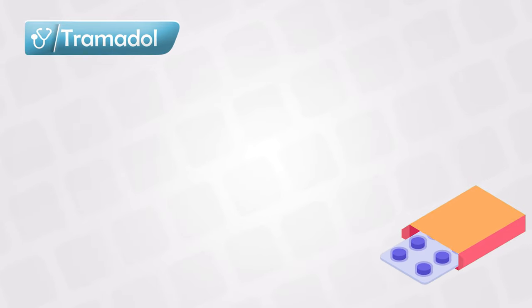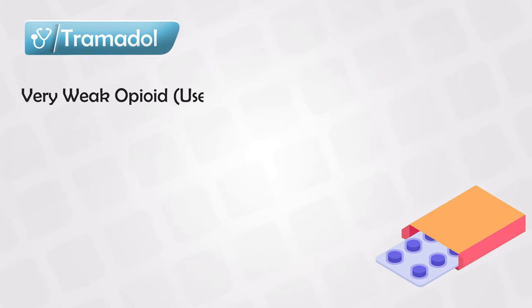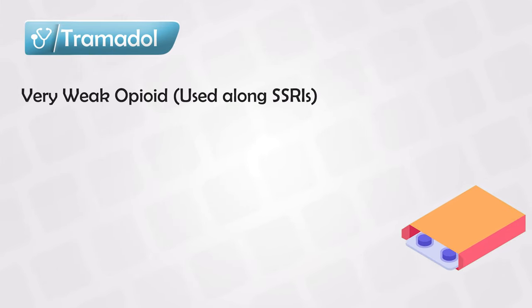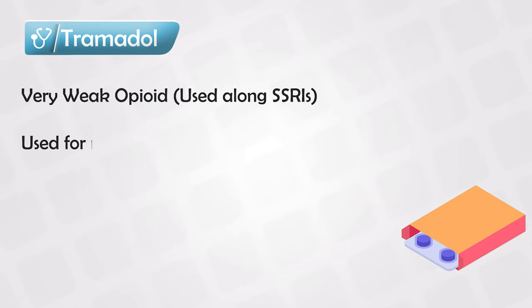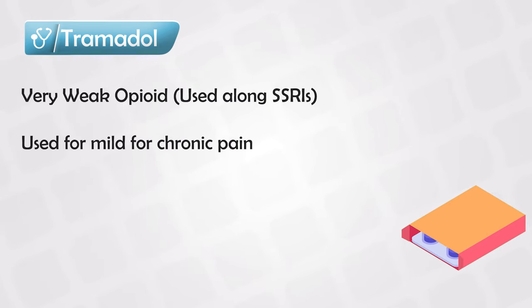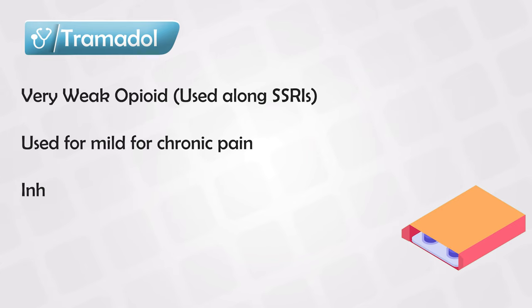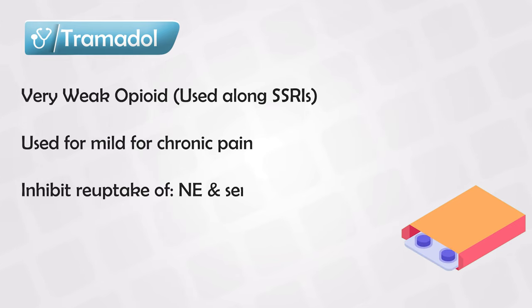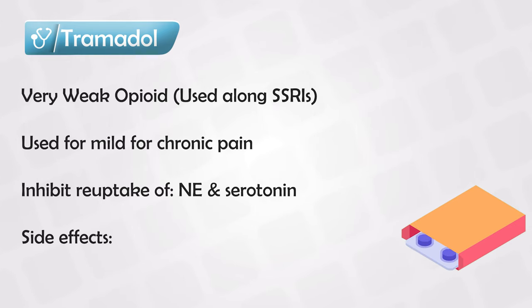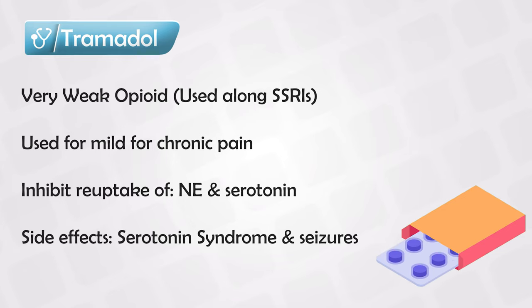Tramadol is a very weak opioid, and it is commonly used along with SSRIs. It is mainly used for mild chronic pain as a maintenance therapy. It can also inhibit the reuptake of norepinephrine and serotonin, so it can cause serotonin syndrome and seizures.